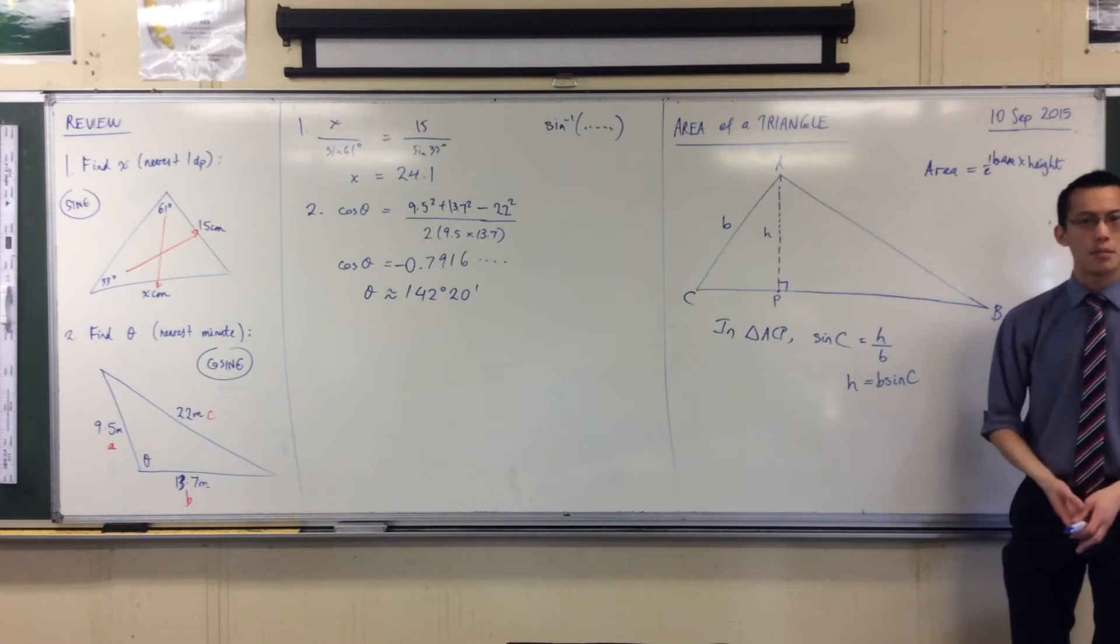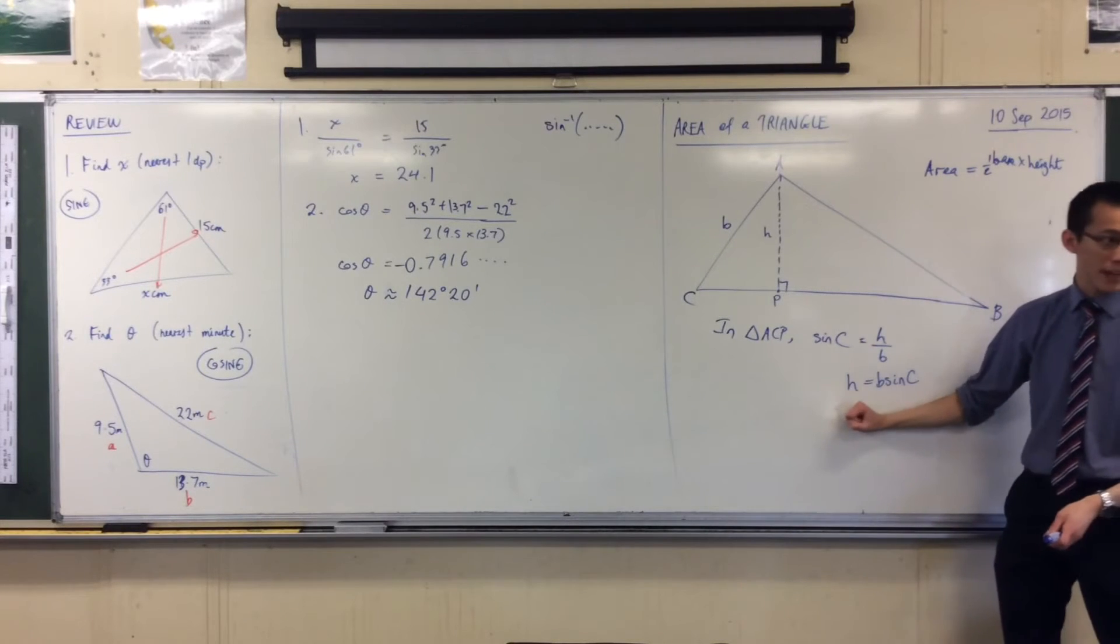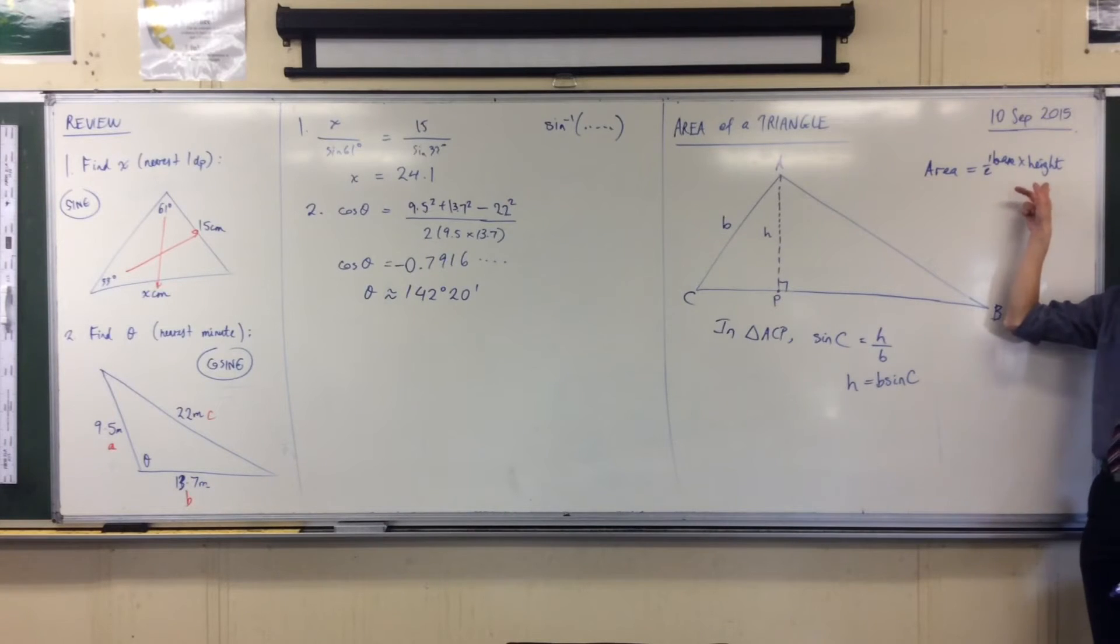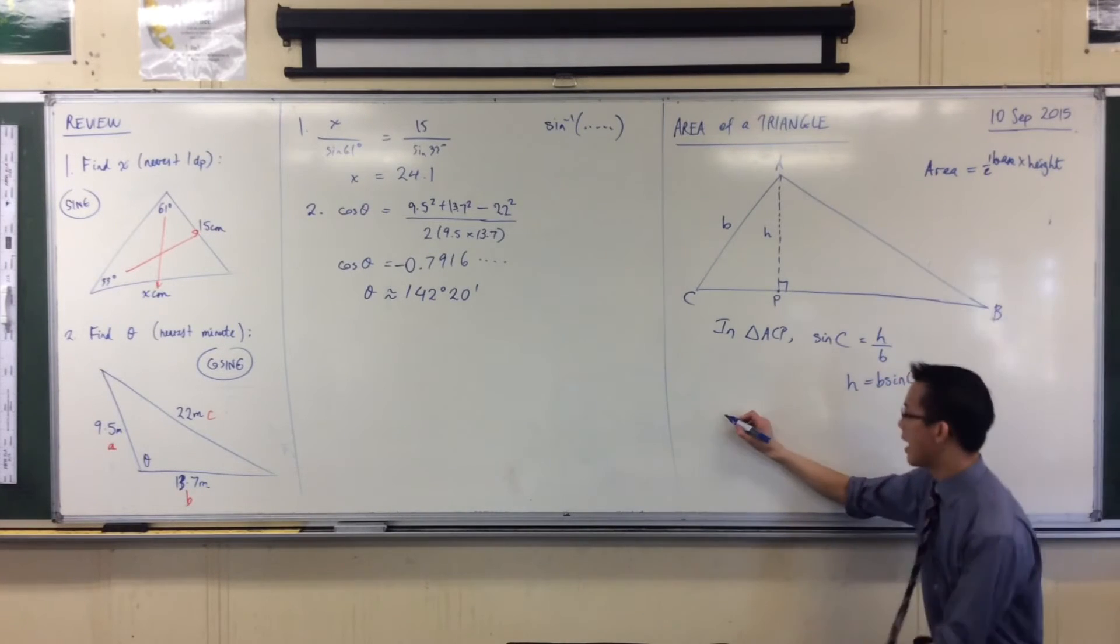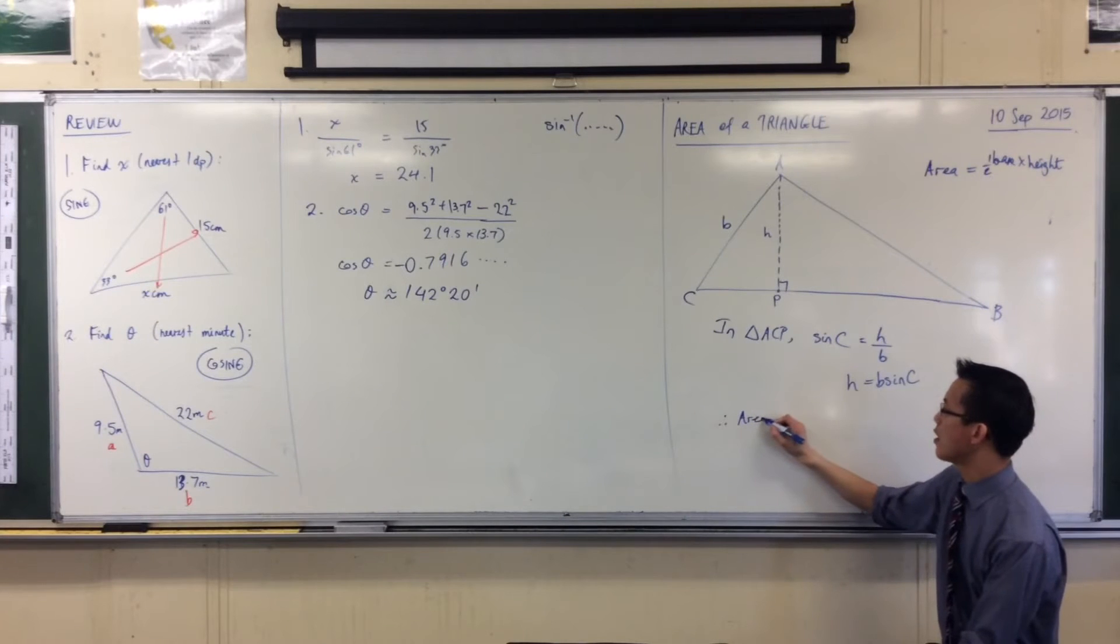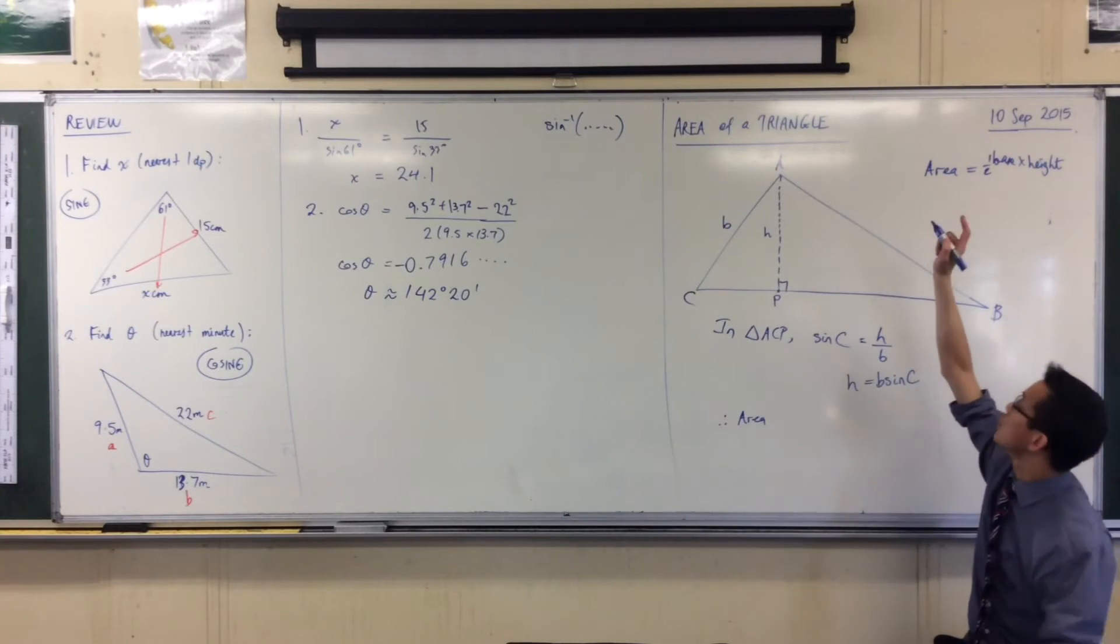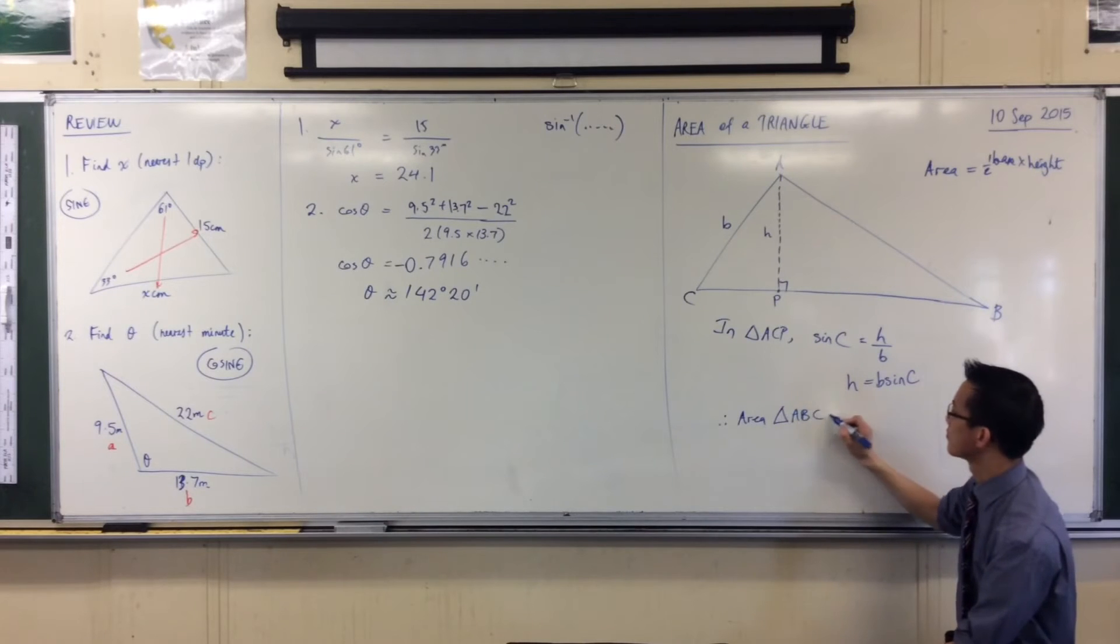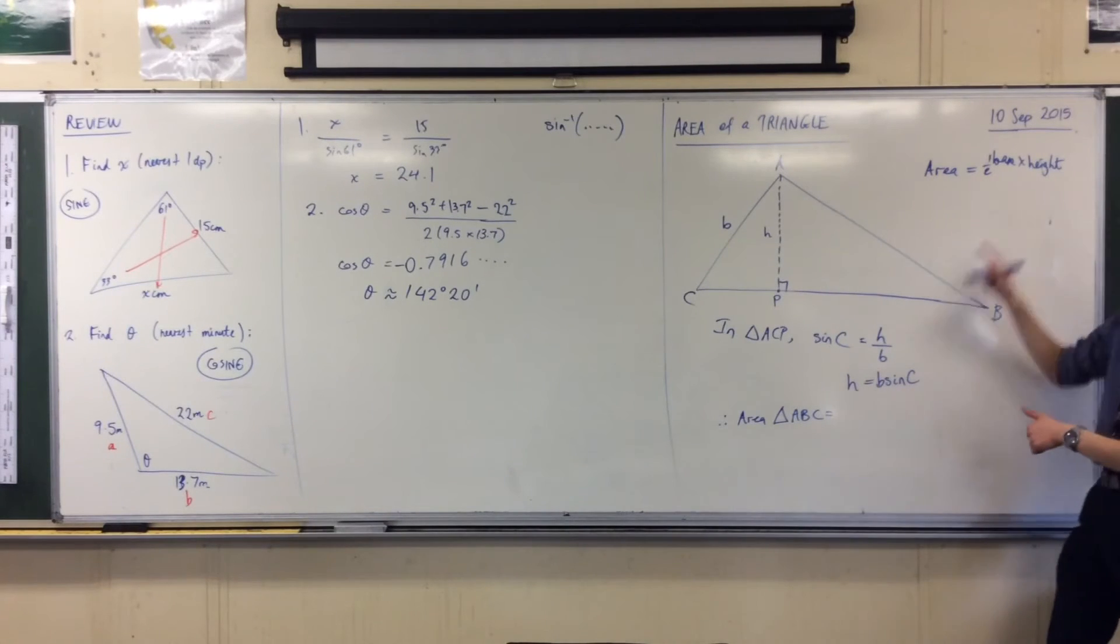And just like with simultaneous equations, if you can make something the subject, you can get rid of it from any equation where you need it. Instead of saying height, I can say B sine C. I can substitute it out. So, let's just do that. I can say, therefore, the area of my big triangle, which is ABC, that's half base times height, but I'm going to say what the base is and what the height are in this particular triangle.